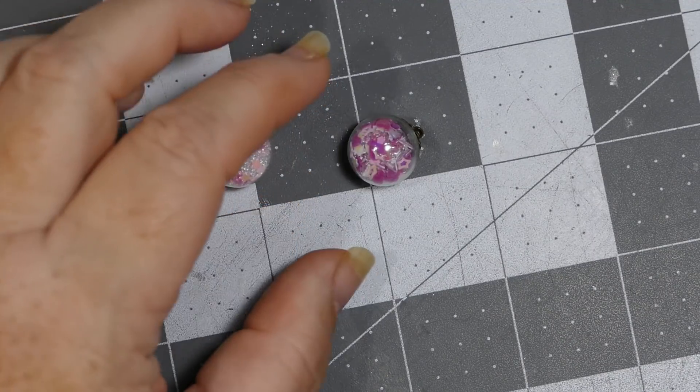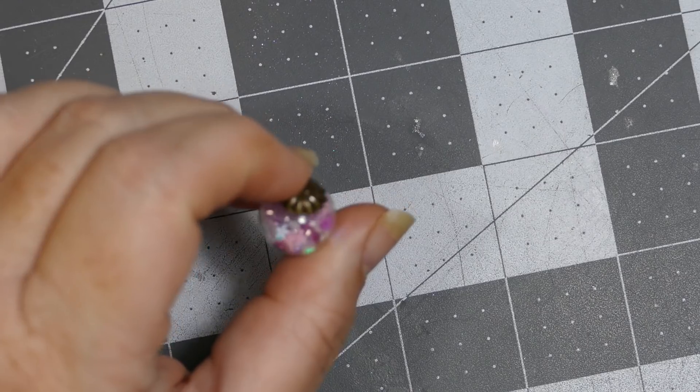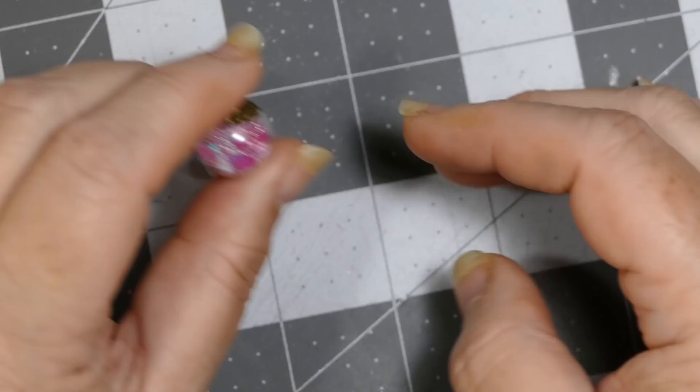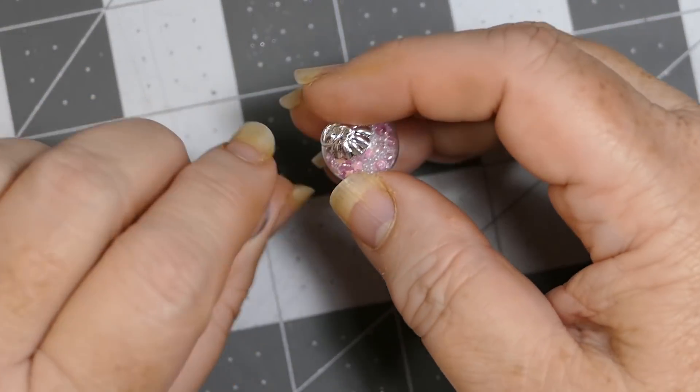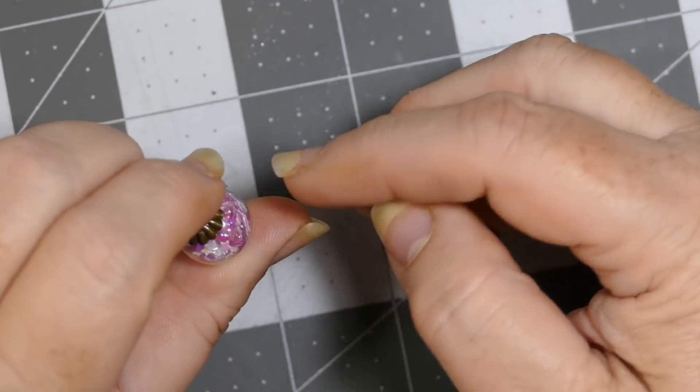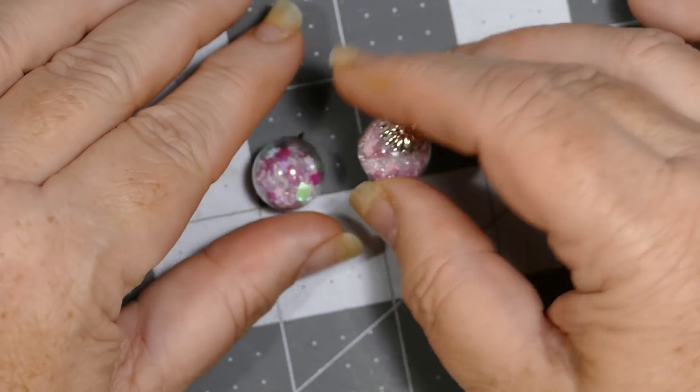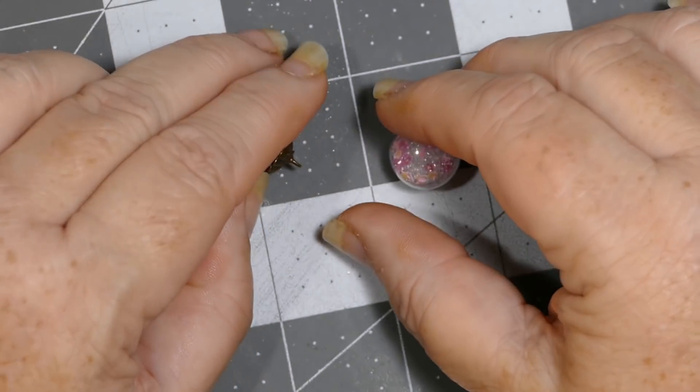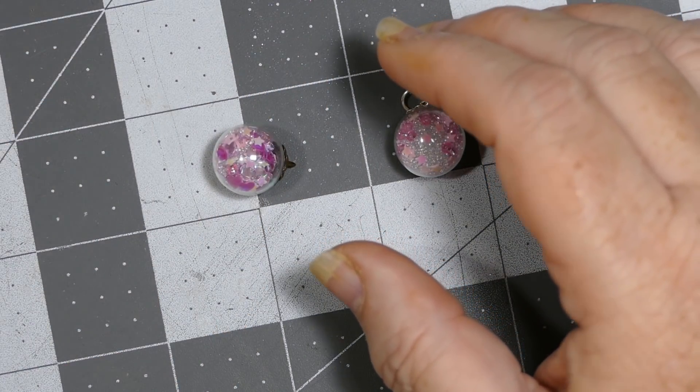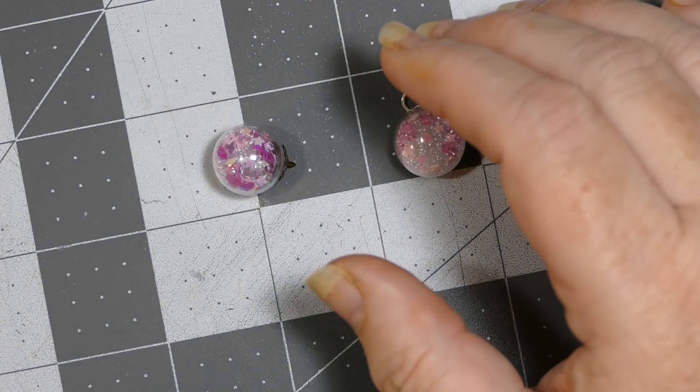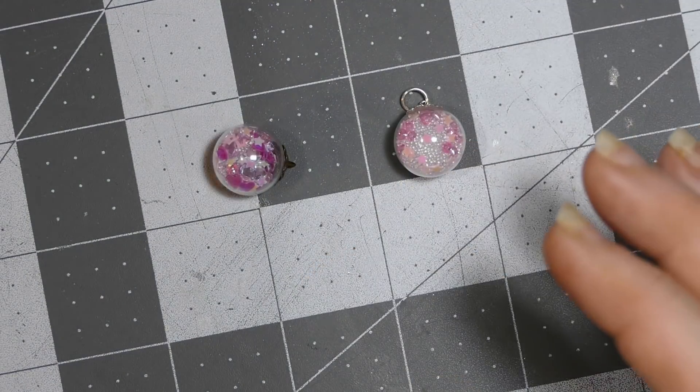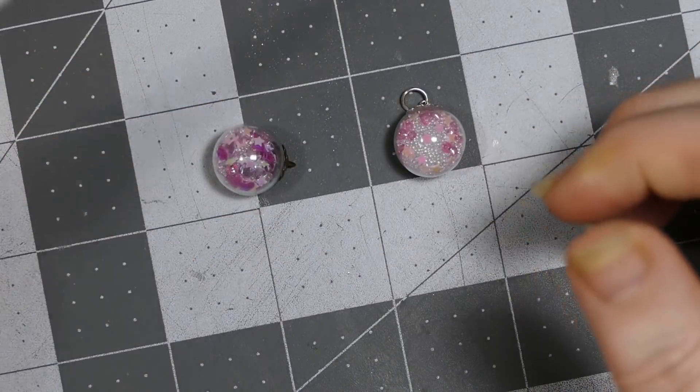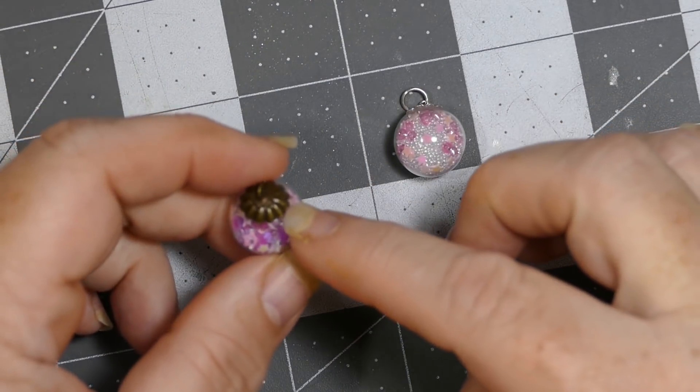I didn't fill this one as high, and I probably could have added a little bit more. I did put in a tiny bit of seed beads but not near as many as I did on this one. And what I did was I made myself a paper funnel. I made this tiny paper funnel so that I could get my things down into the hole.